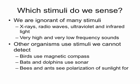You don't have to write these examples down, but there are some things we can't sense as humans — we're not superhumans. We can't see x-rays, radio waves, ultraviolet waves, or infrared light. We can't hear very high and very low frequency sounds. There are other animals that use stimuli we don't even have senses for — like birds knowing which direction to fly in winter, bats and dolphins and their use of sonar, and bees and ants seeing the polarization of sunlight for finding their food sources.